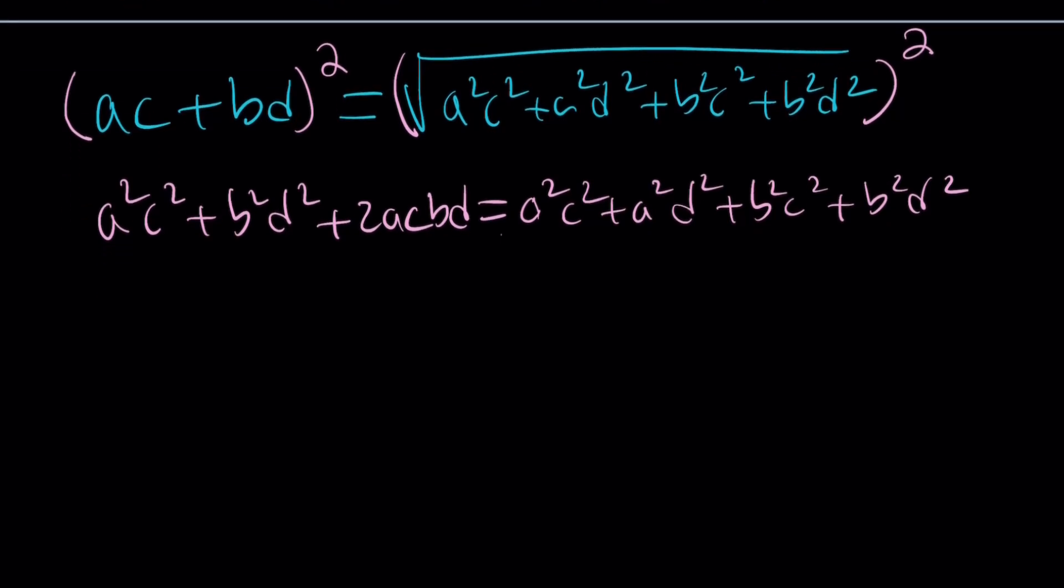And then more things are going to cancel out. I love this problem. This is crazy. A squared C squared cancels out. Not everything though. Be careful. Only the first and last terms on the right hand side and the first two terms on the left hand side.